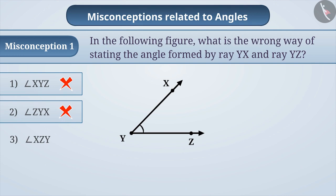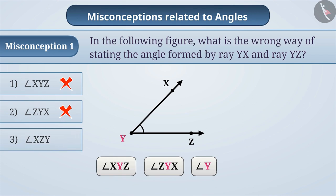The correct understanding is that the angle shown in the given figure can be written as angle XYZ, angle ZYX, or angle Y. While naming the angle, it is important to keep in mind that the letter of the vertex remains in the middle of the remaining two letters. The letter in the middle tells us at which point the angle is being formed.